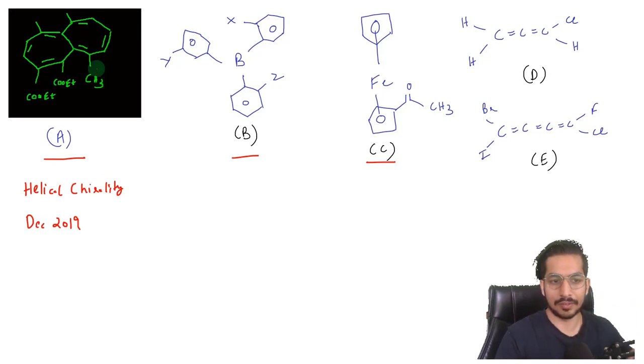These two rings are not planar - one ring is above and one ring is below. So this molecule also has some kind of helical chirality associated with it, because of which it becomes optically active.